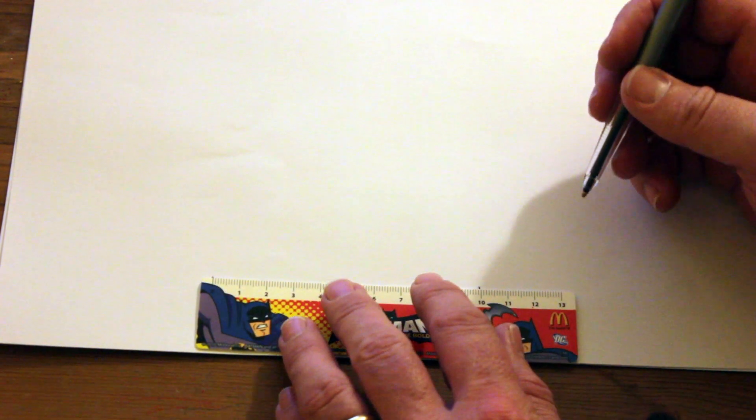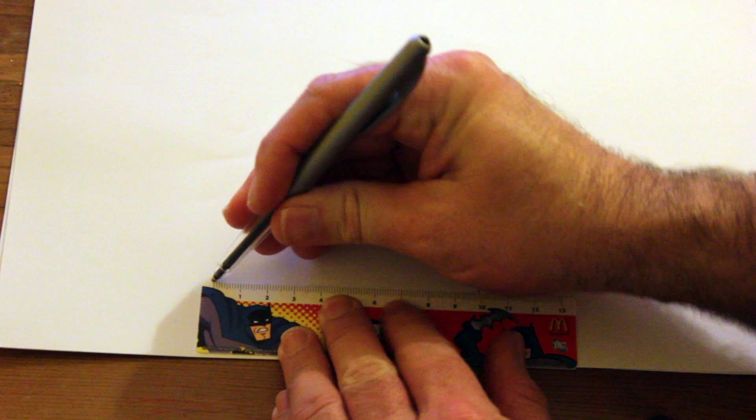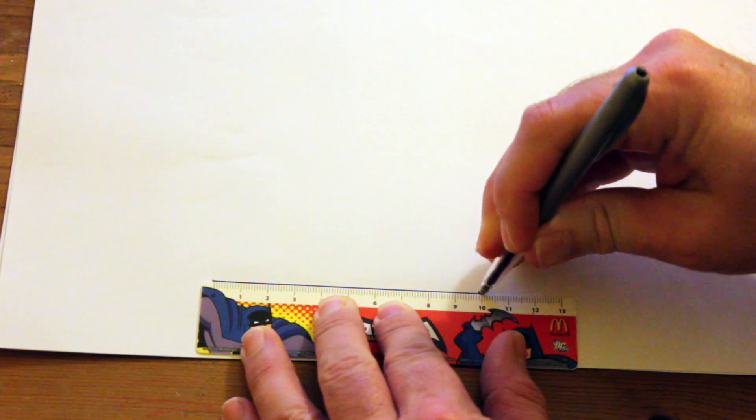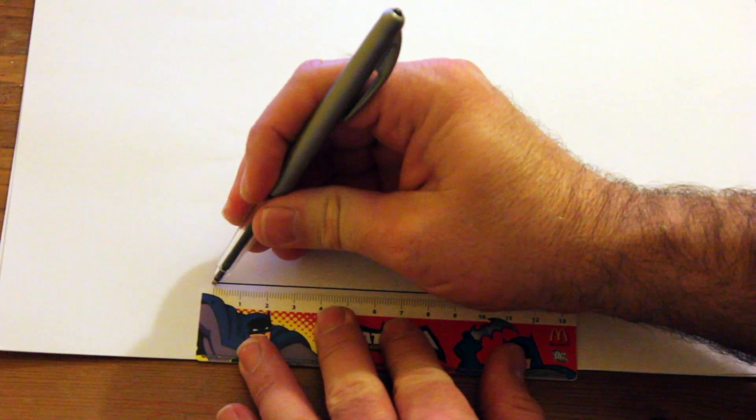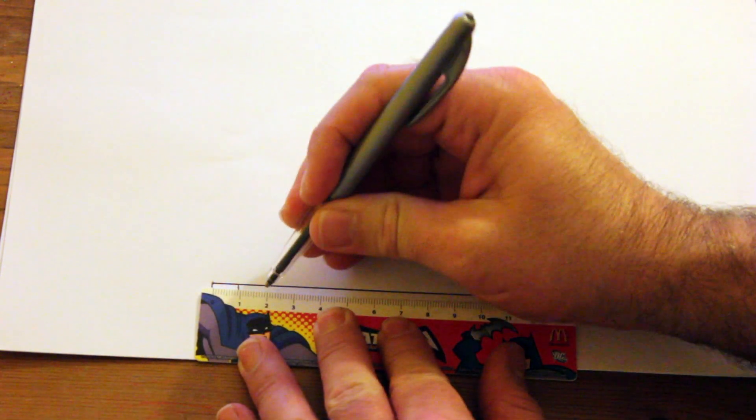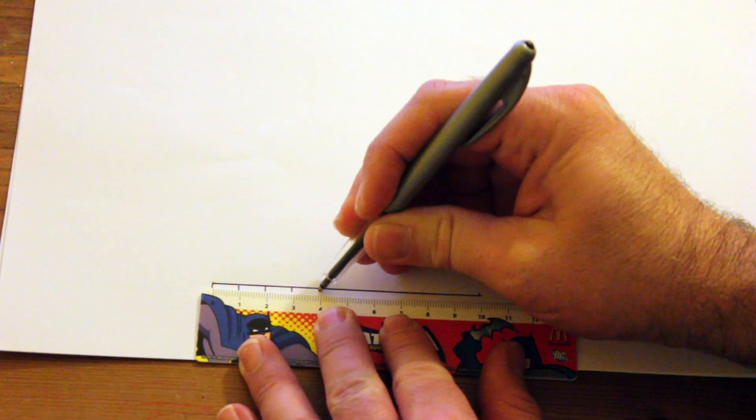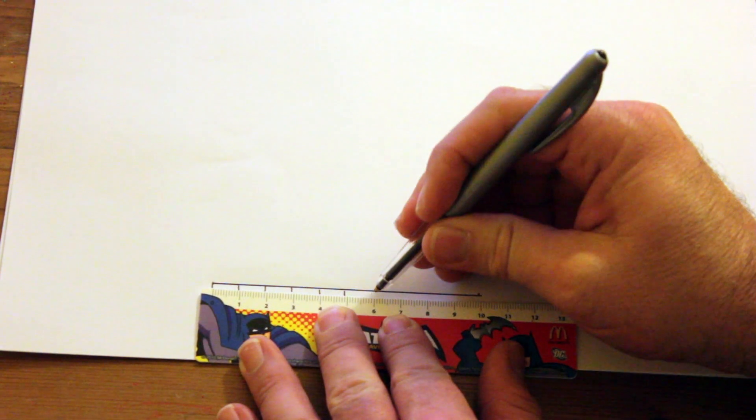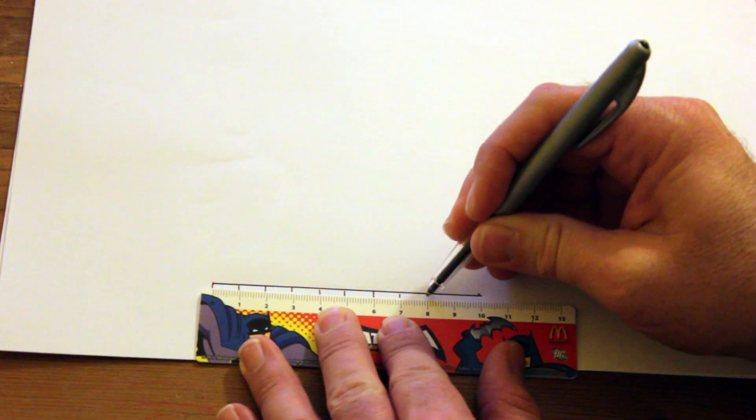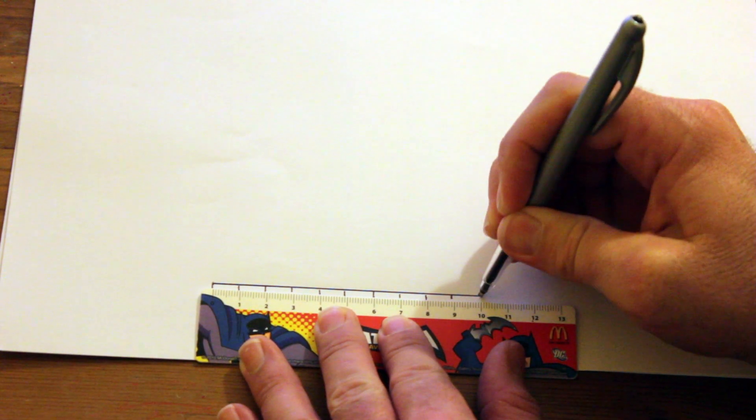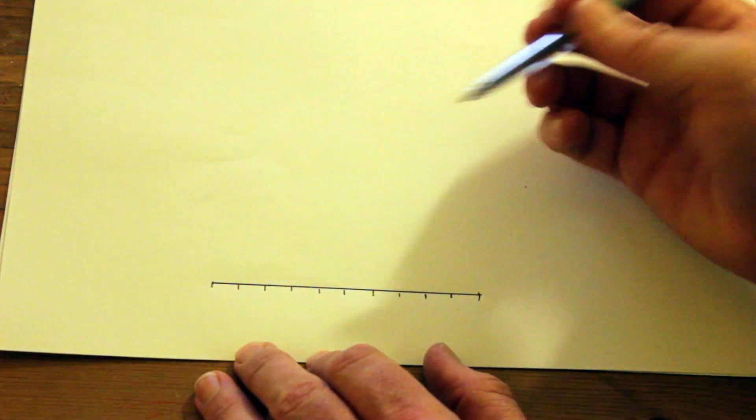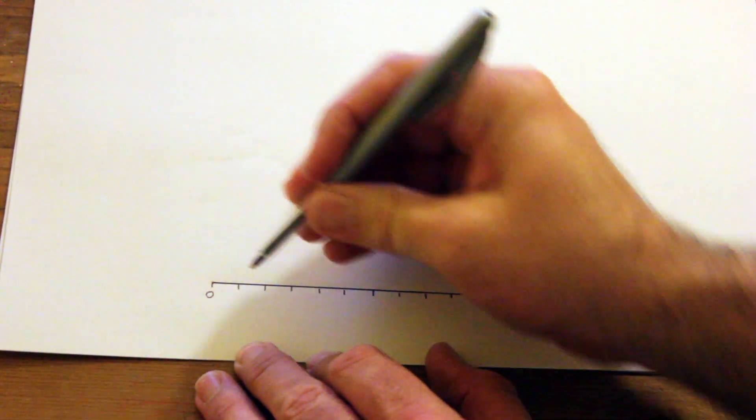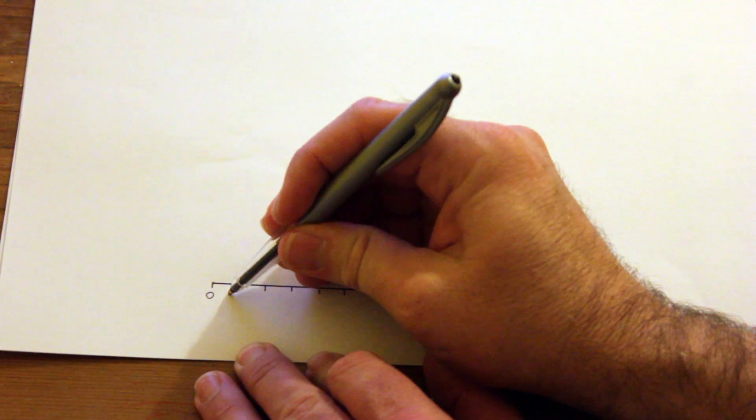First I will draw the bottom horizontal axis 10 centimeters long and from left to right I'm going to mark it out in 1 centimeter intervals. Each centimeter is going to represent 10 percent, so we'll start with zero in the bottom left-hand corner and go 10, 20, 30, and so on.